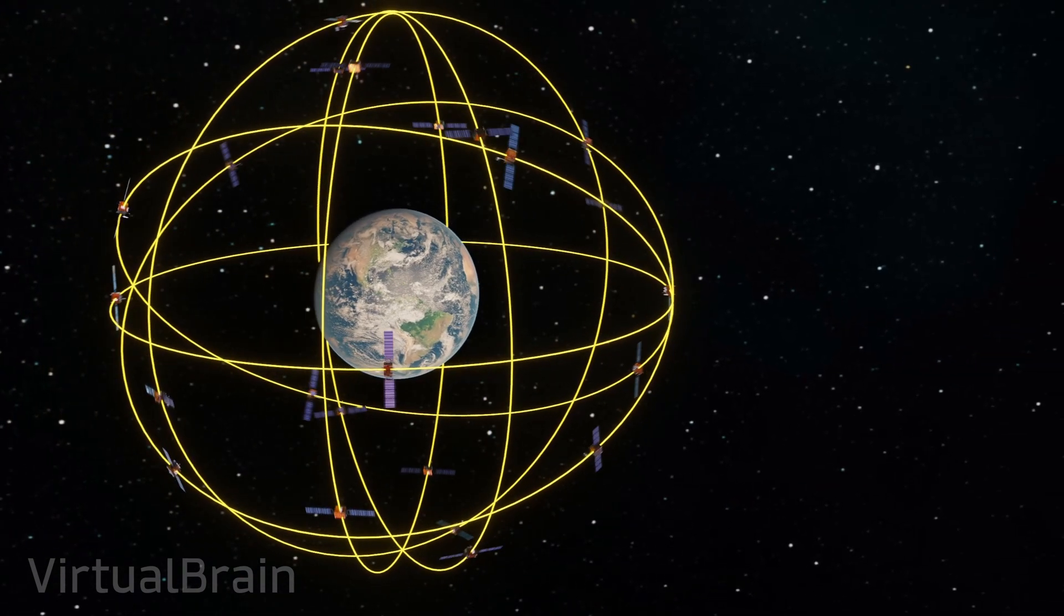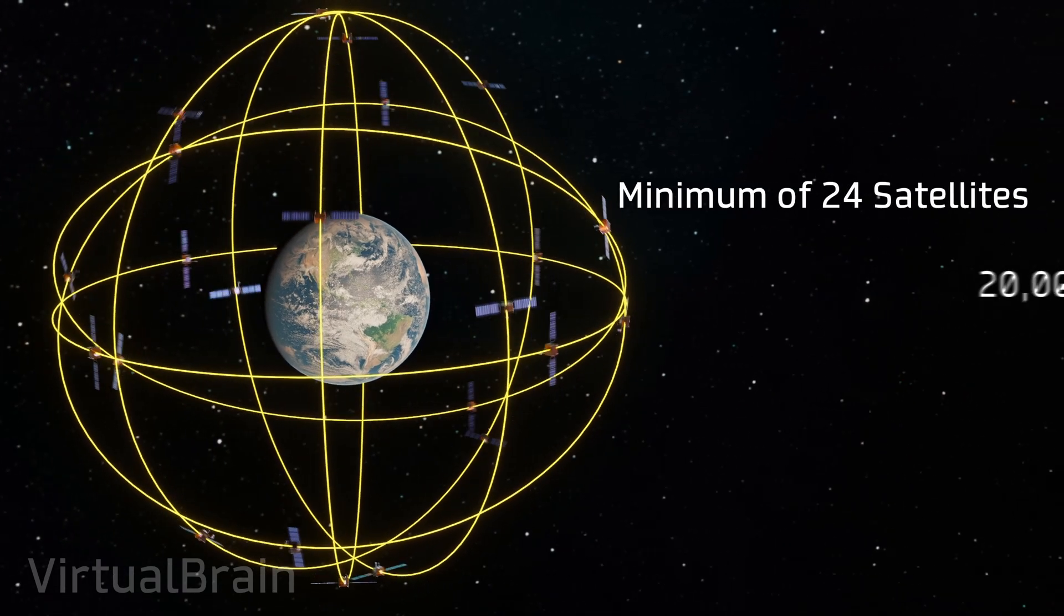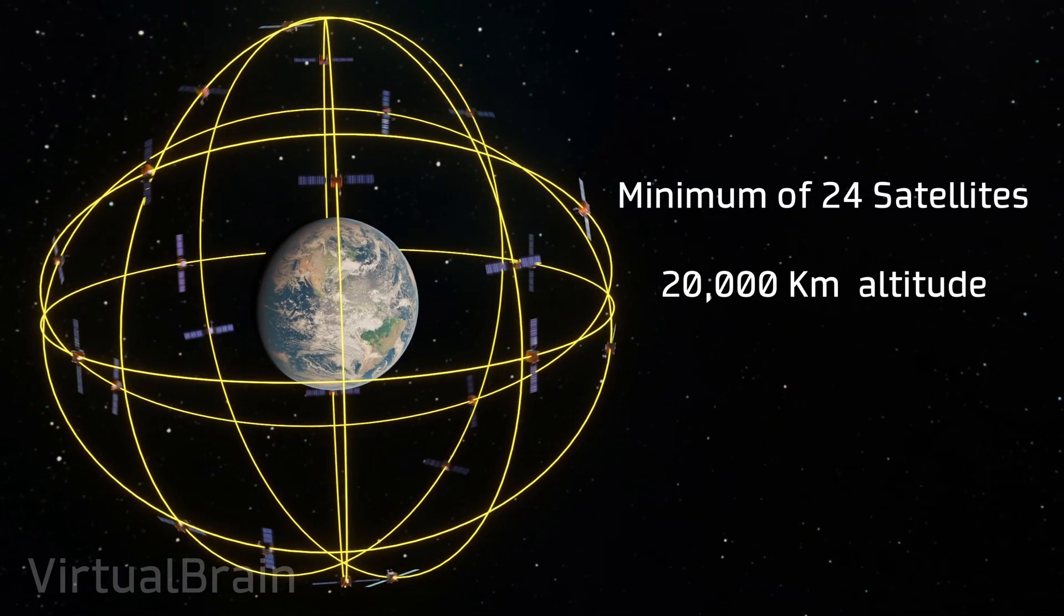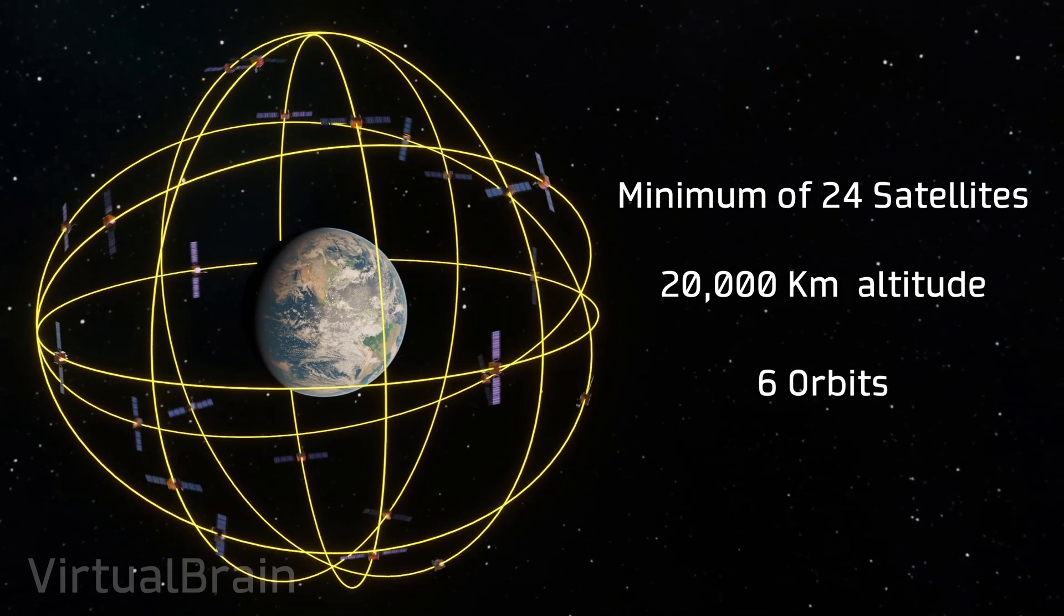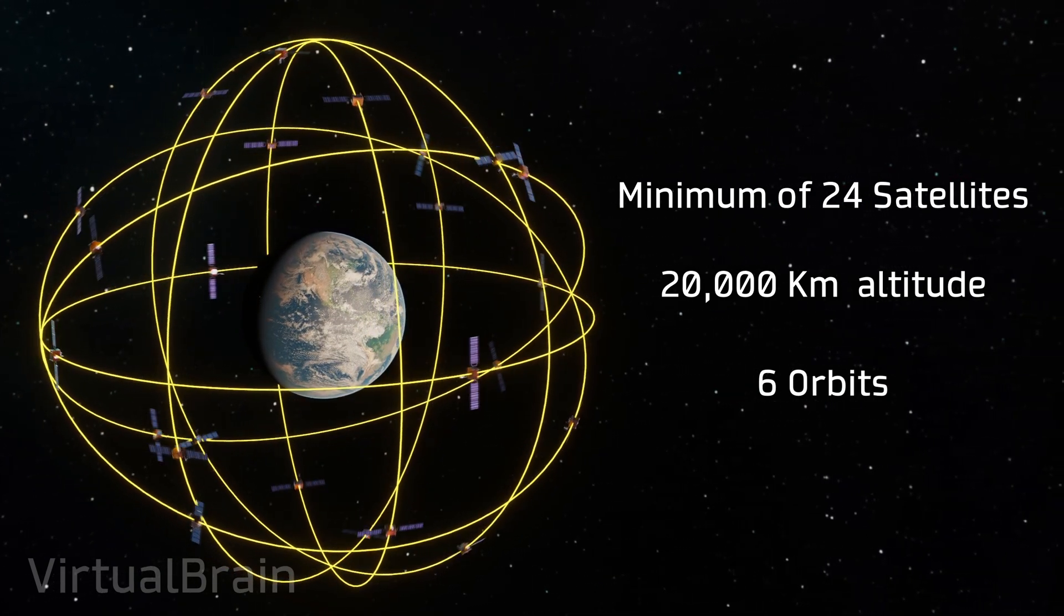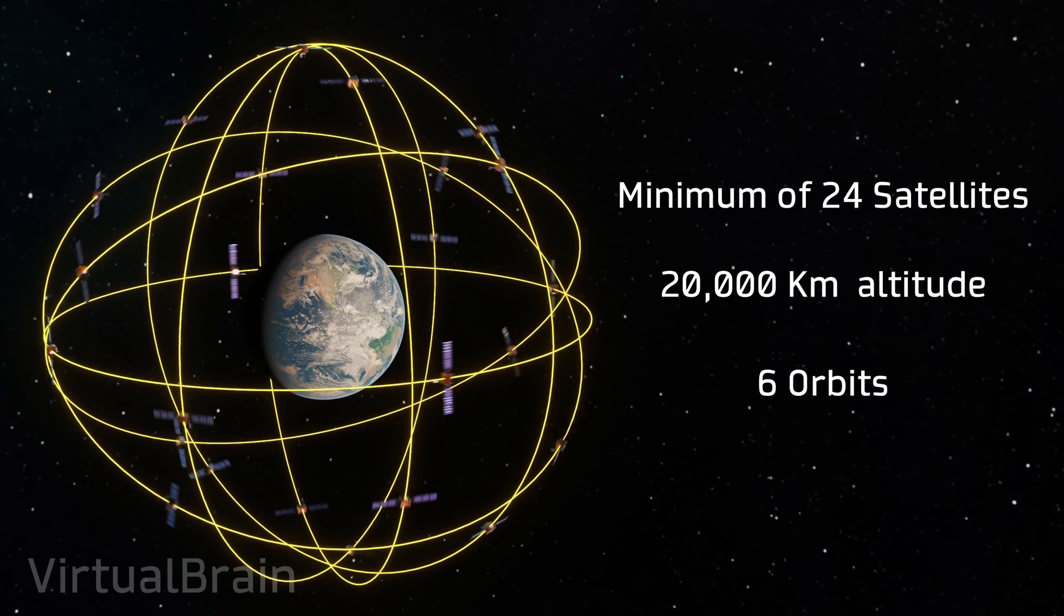Thus, by positioning at least 24 satellites at an altitude of about 20,000 kilometers, which also move in six orbits around the planet Earth, it is ensured that each receiver has at least four satellites visible at all times, no matter where it's located.